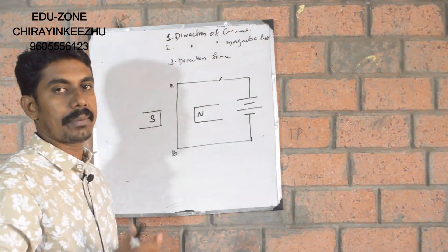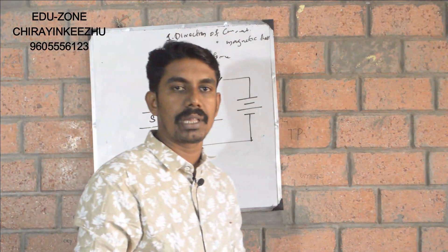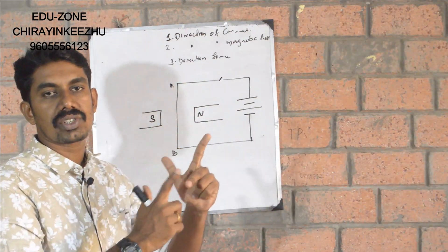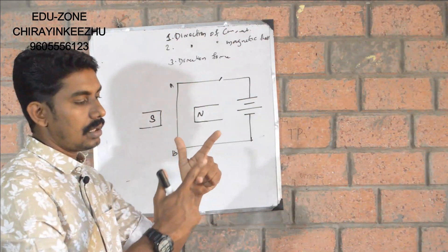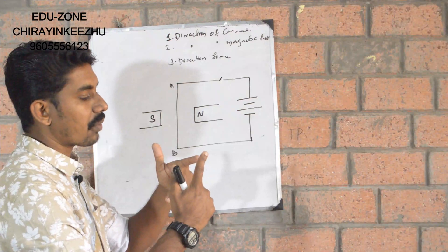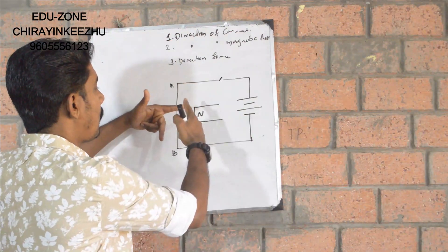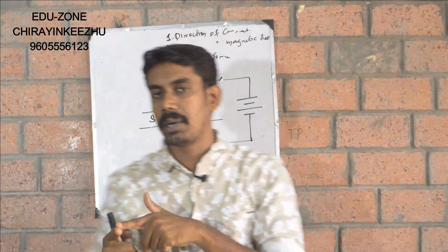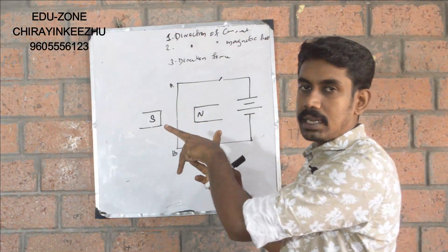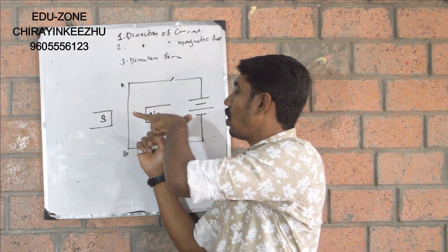We call this the force. If we set Fleming's Left Hand Rule, the direction of motion is in the indicated direction. We stretch these three fingers to 90 degrees, perpendicular to the vertical line. If we align the forefinger in the magnetic field direction, the four fingers will be in the magnetic field direction.